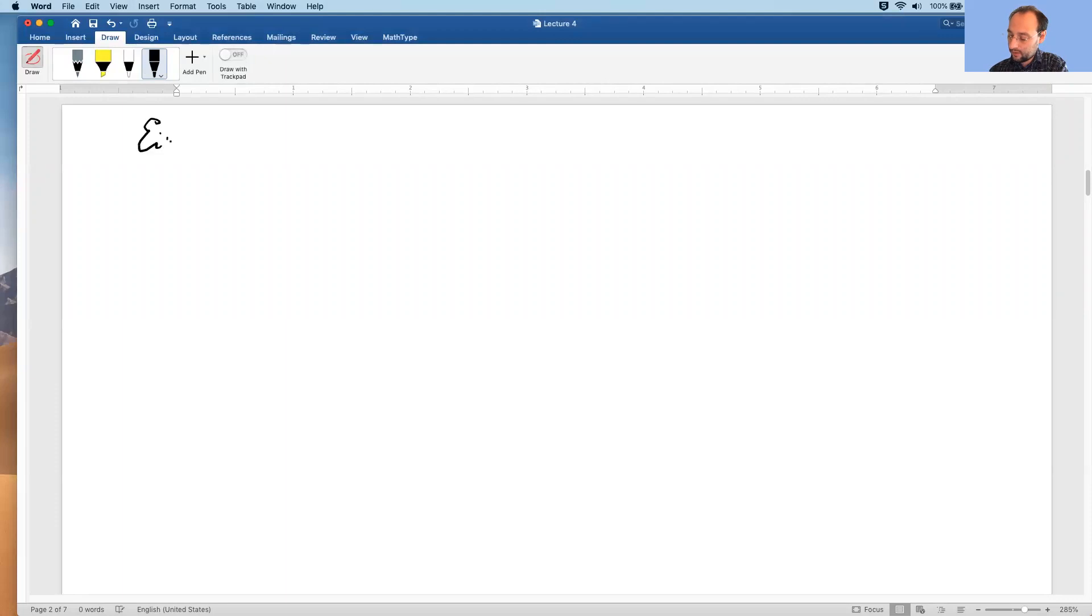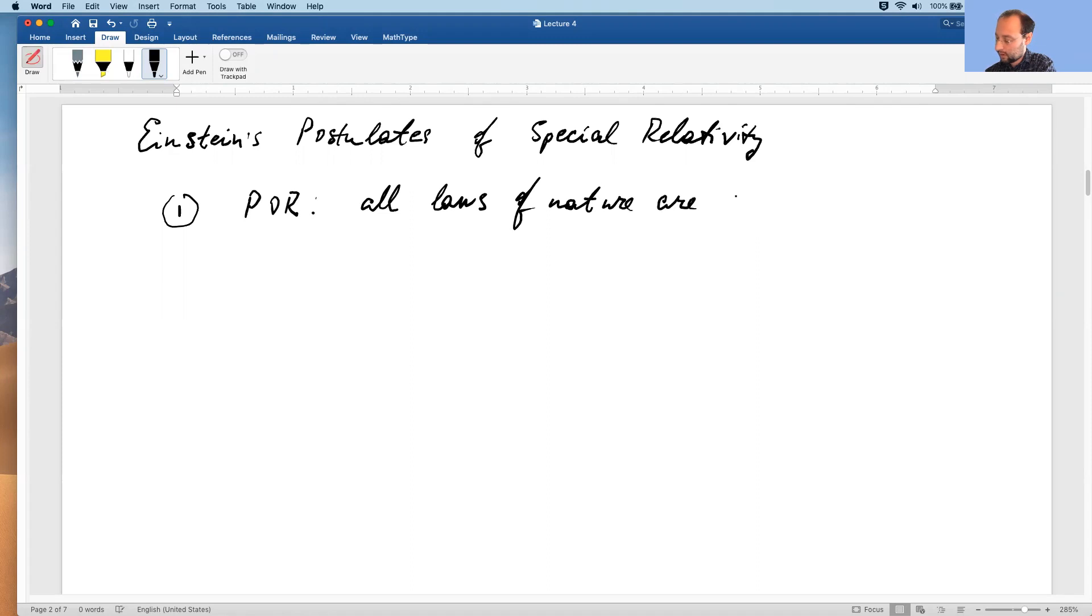So the first is just principle of relativity. Einstein's postulates of special relativity. I'll show it one, and this is just POR. All laws of nature are the same in all inertial reference frames, and by the same we mean they take the same form.